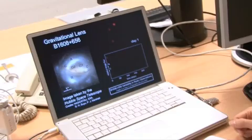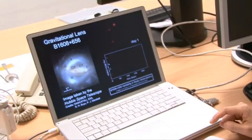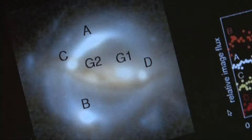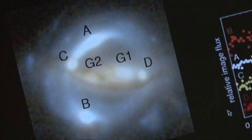So B1608 plus 656 is one such multiple image system. Shown on the left is the Hubble Space Telescope image of the lens system. A background galaxy, a single galaxy which we call the source galaxy, is lensed into four images: A, B, C, and D. The two galaxies G1 and G2 are acting as the gravitational lens and are therefore called the lens galaxies.